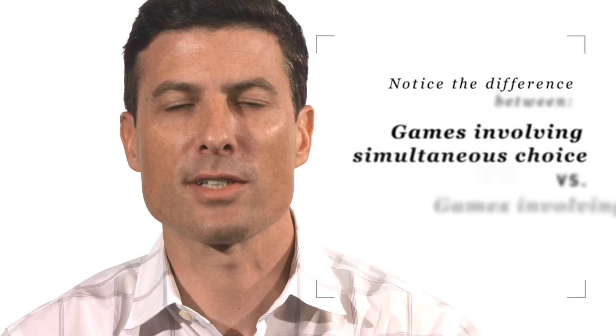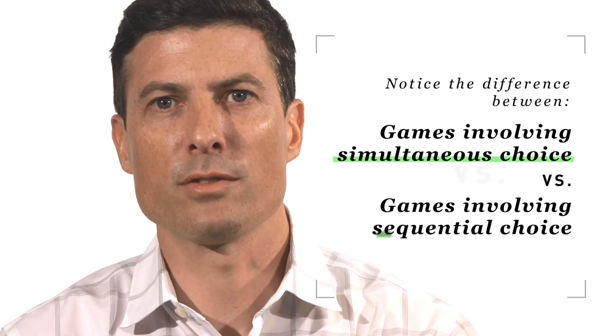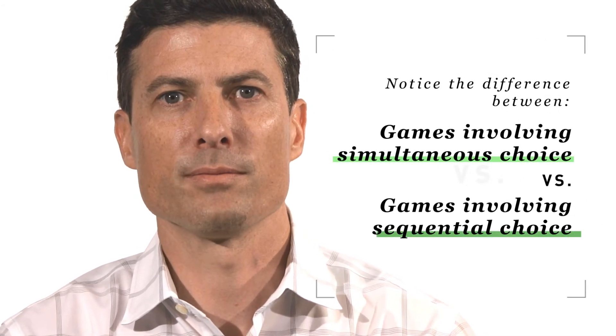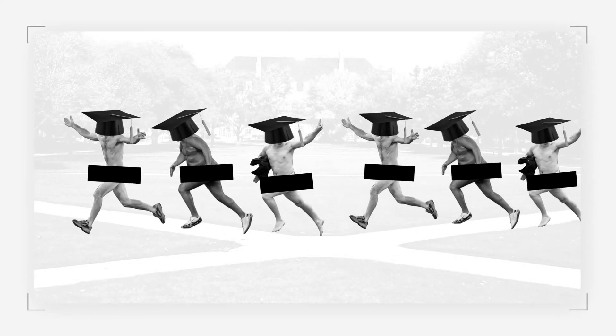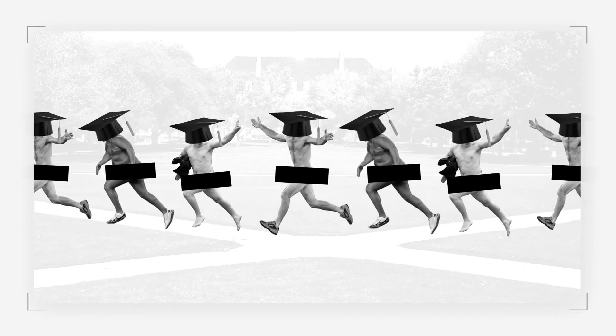A final distinction worth mentioning is the difference between games that feature simultaneous choice and games involving sequential choice. Here's an example. Suppose you go to a college at which, sometime before graduation, the cool kids are expected to run naked across the quad.